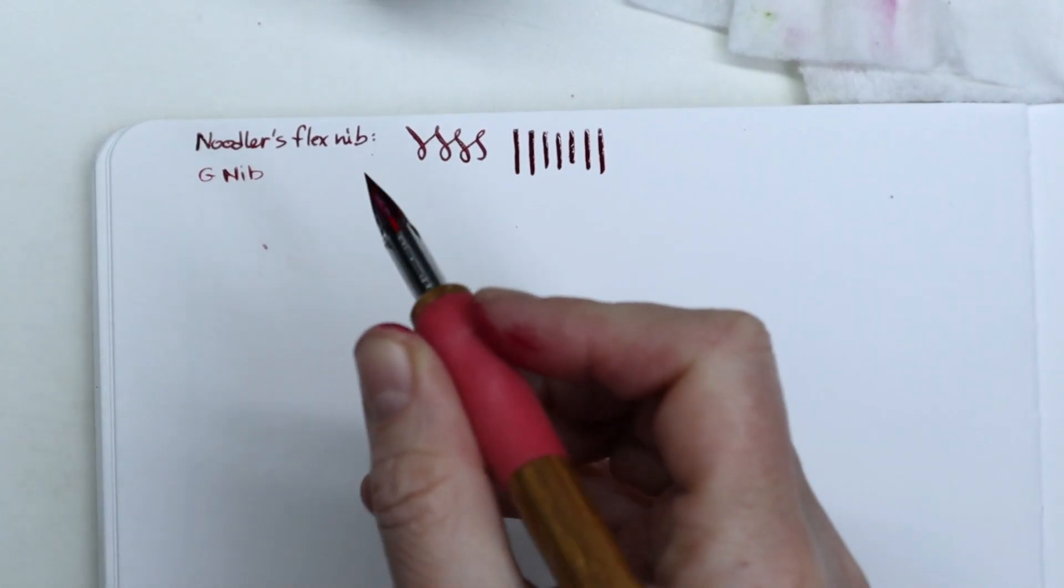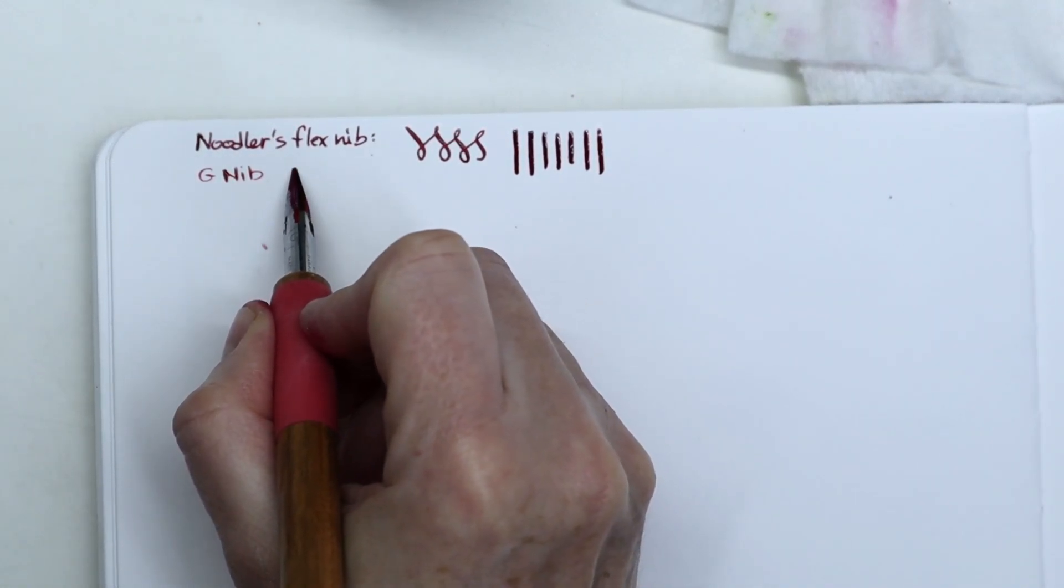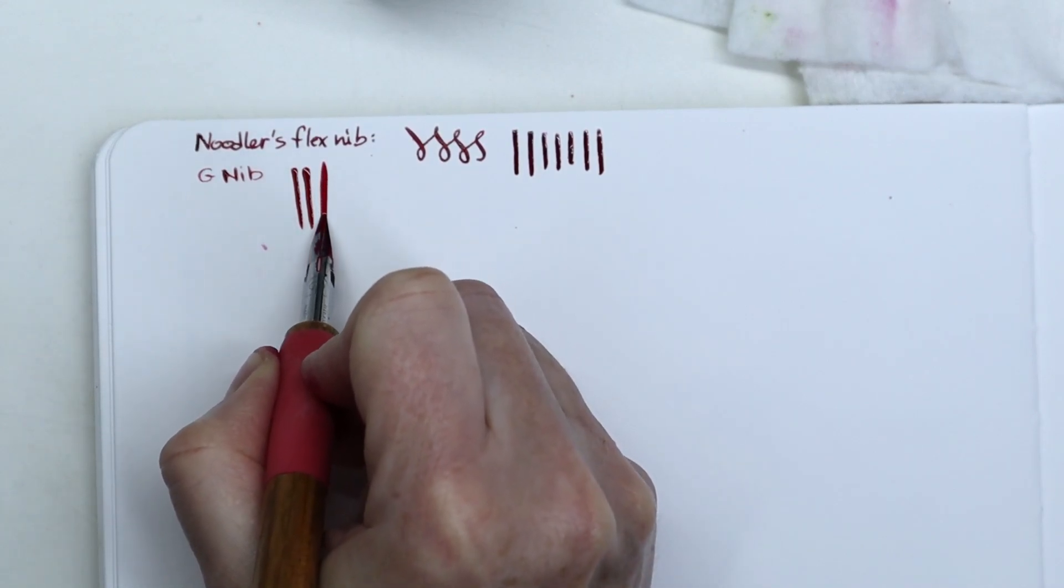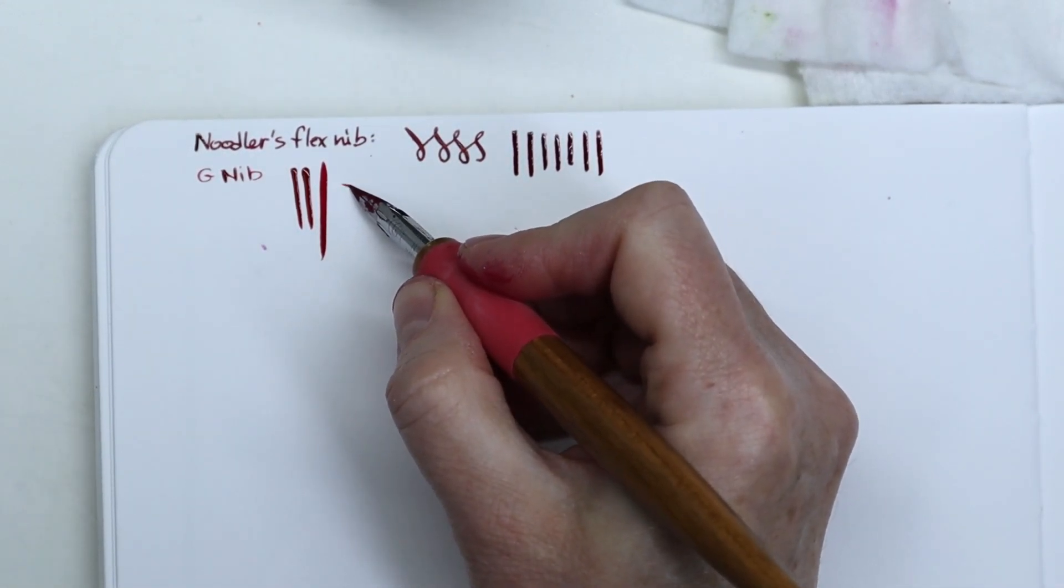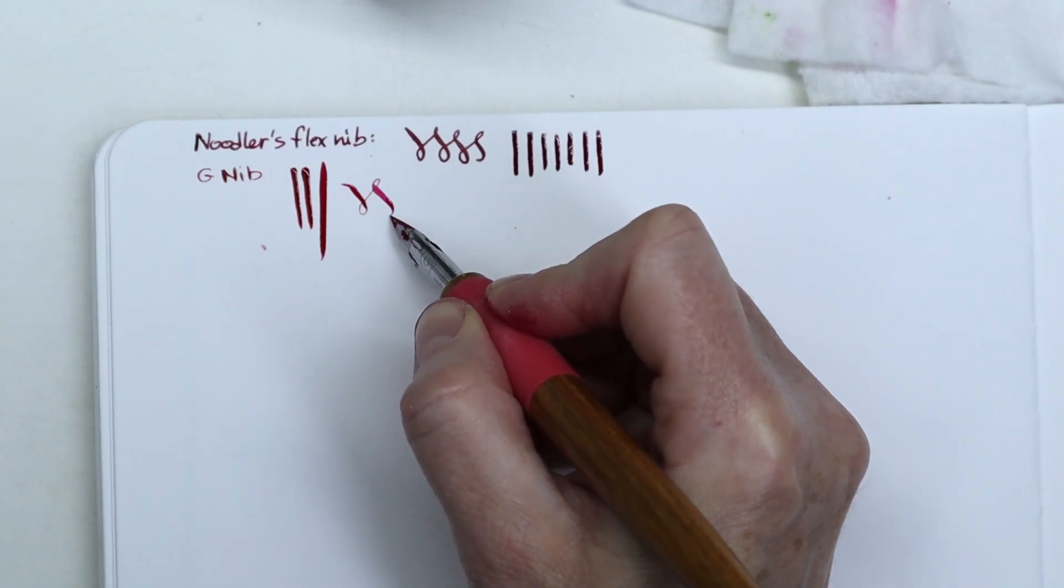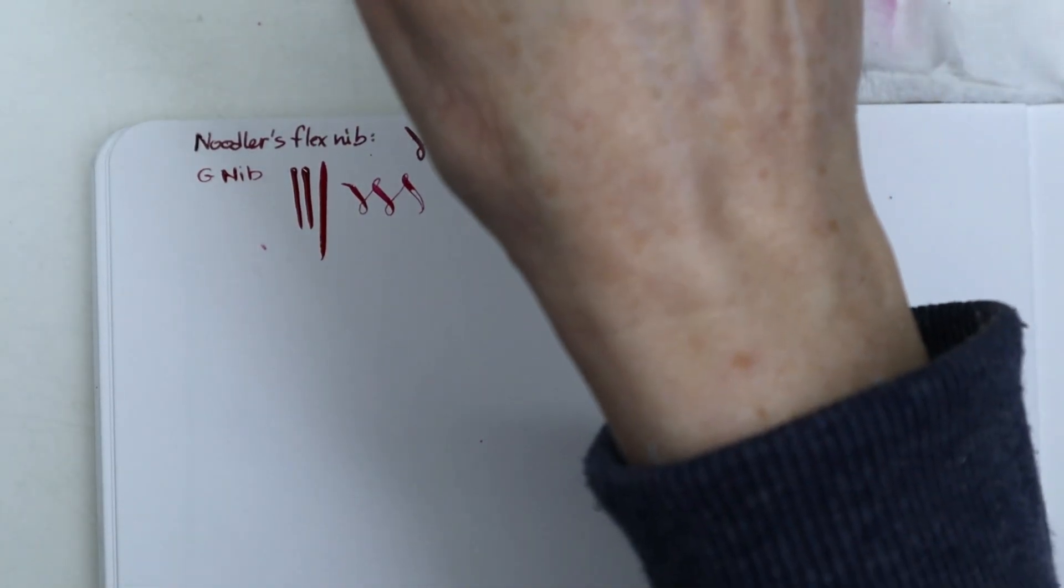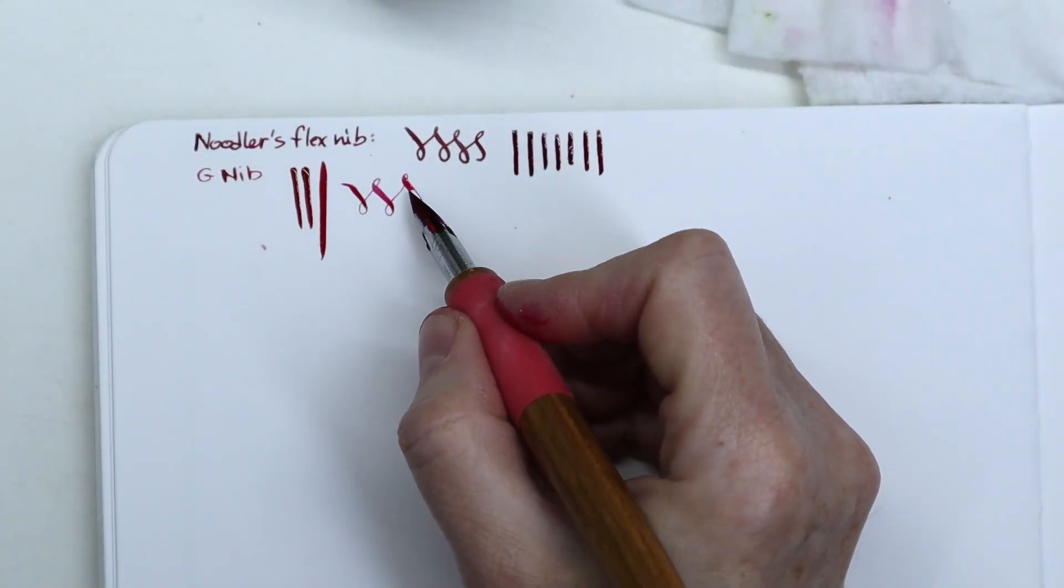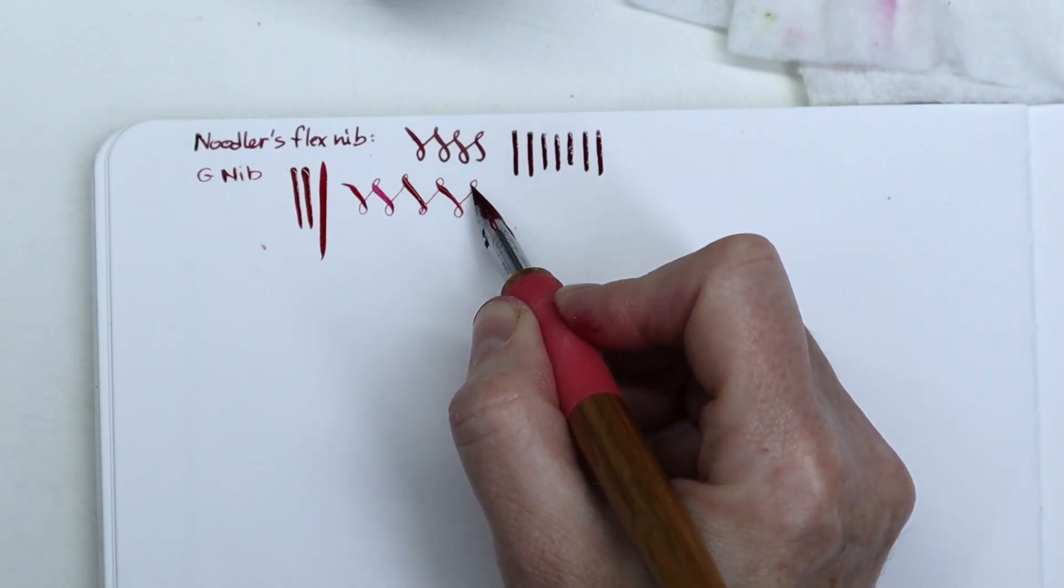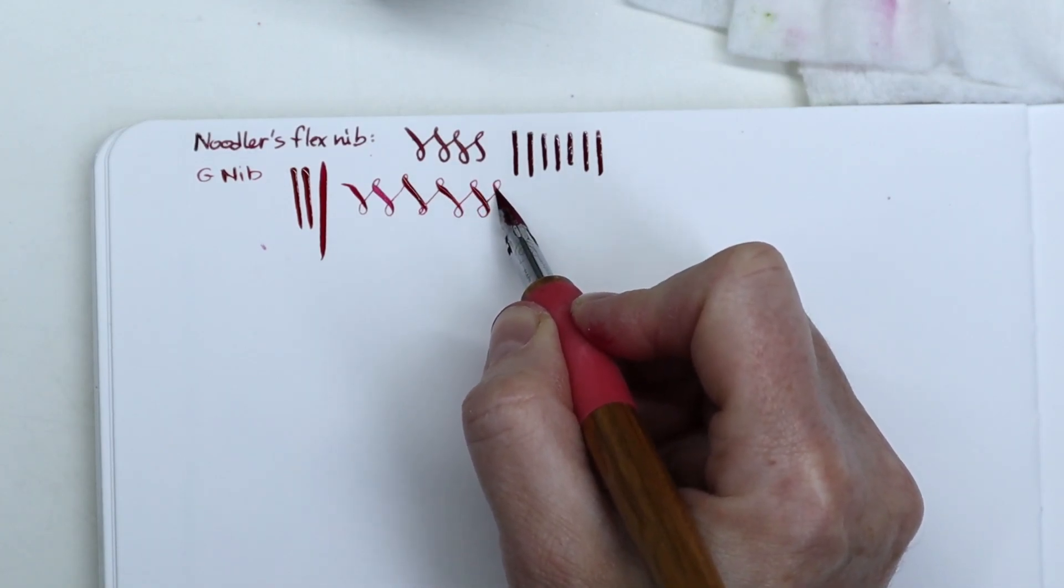Just writing with regular handwriting, it's a really nice pen. I like it very much. Because it's a flex pen, when you start pushing on the nib, the tines separate and it releases more ink. You can see the ink really puddles a little bit, but it dries pretty quickly. I guess it depends on the ink and paper you use.